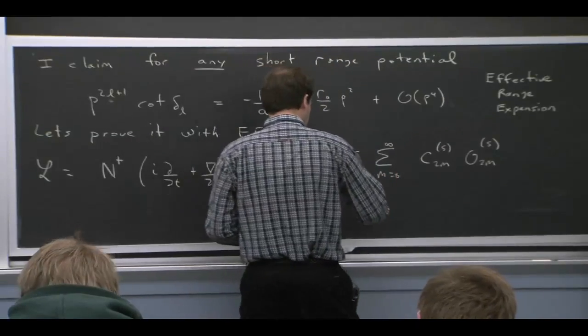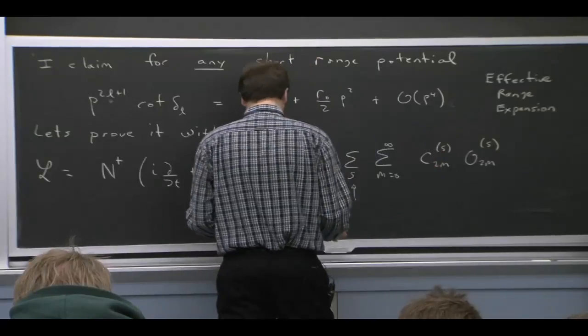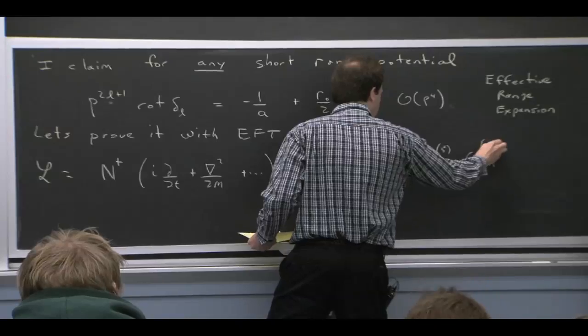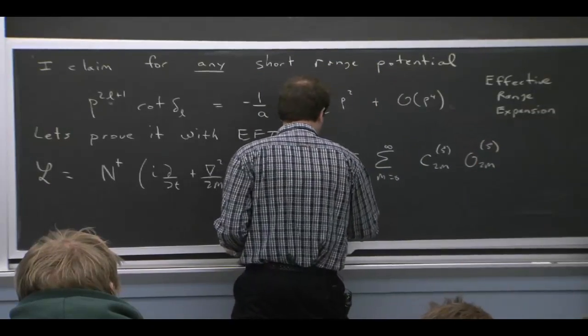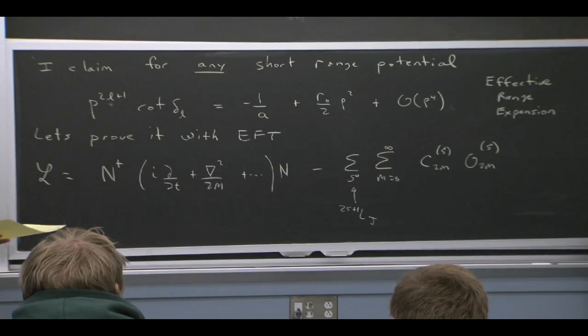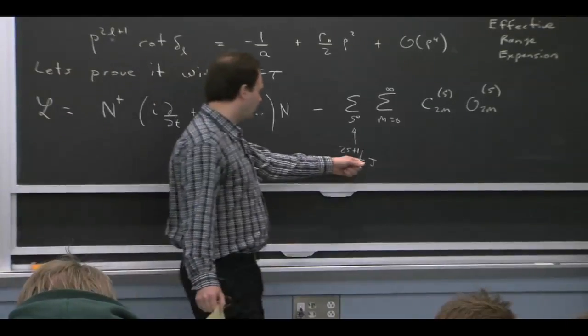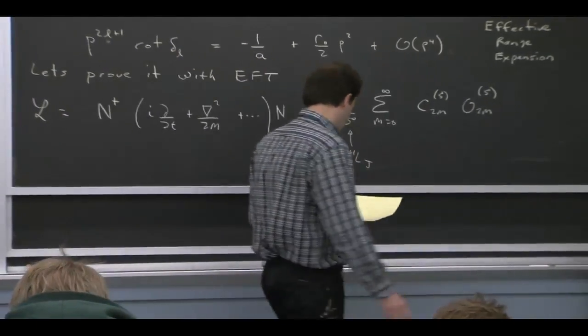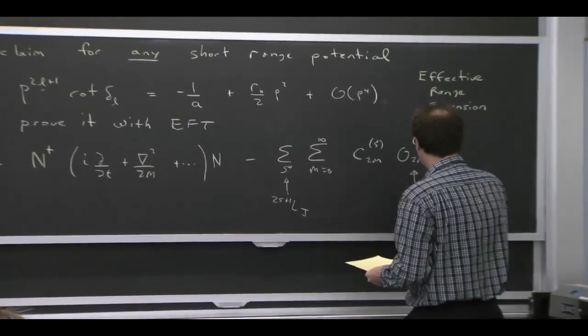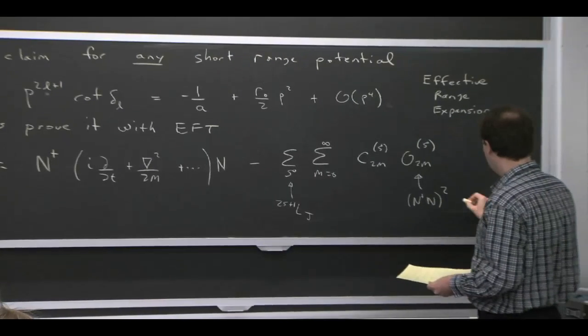So there's a whole bunch of operators that involve nucleon fields with some Wilson coefficients. The notation here is this S is kind of a pseudonym for the channel. So this S here, which is some, maybe it should be a script S or something, is telling me which channel I'm in. And in a spectroscopic notation, you'd say you're in the 2S plus 1 LJ channel. So this would be the angular momentum, total momentum, and the spin. And these operators here, for our purposes, are four nucleon fields with 2m derivatives.